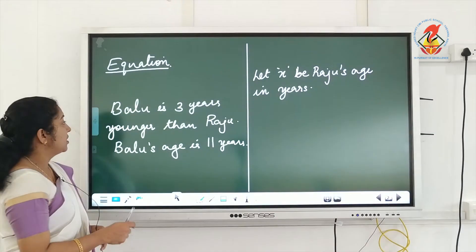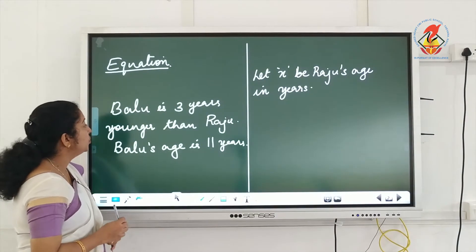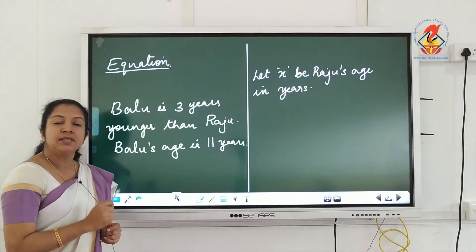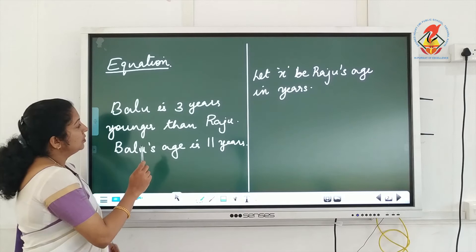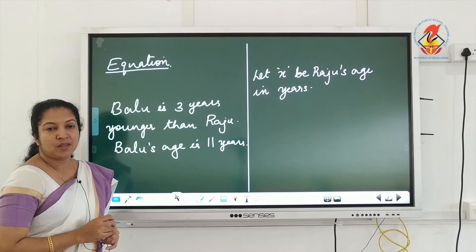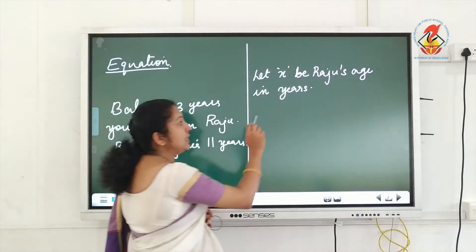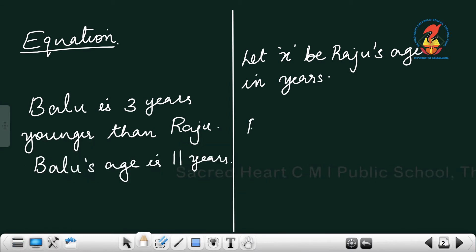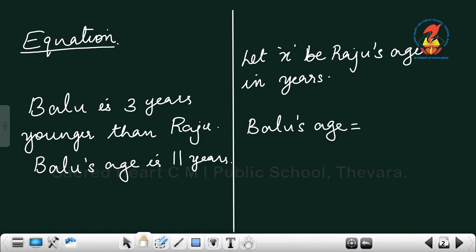Consider the statement: Baloo was three years younger than Raju. This means if we know Raju's age, we can find Baloo's age. I have taken X as Raju's age. So if X is Raju's age, what about Baloo's age? Baloo's age is equal to X minus 3, because Baloo was three years younger than Raju.